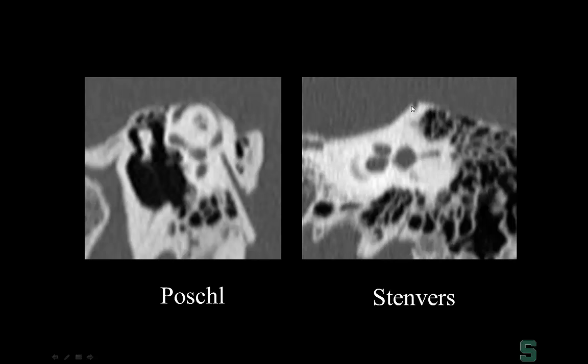The Poshel's view is taken in the plane parallel to the superior semicircular canal, and the Stenvers view is perpendicular to it. We do this in particular to look for superior semicircular canal dehiscence. In fact, one of the most common reasons we perform temporal bone CTs at our institution is to evaluate for superior semicircular canal dehiscence.